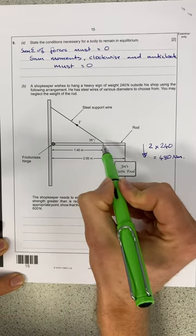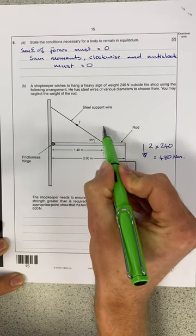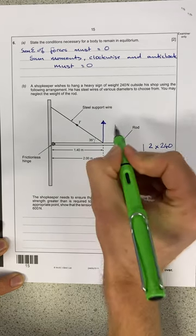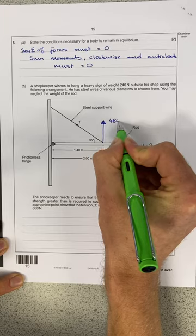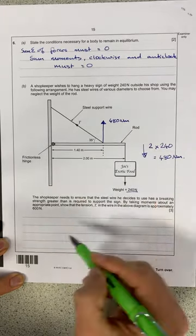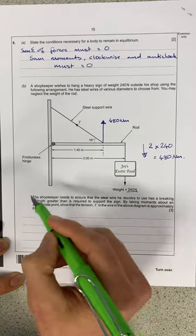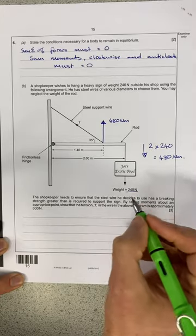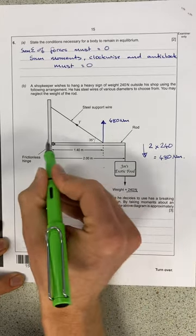Now I know that whatever the upward force from the tension here, I know its moment is going to equal 480 newton metres, because this clockwise moment must be balanced by this anticlockwise moment in this direction.